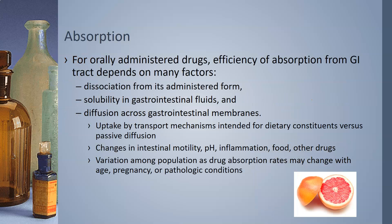For orally administered drugs, the efficiency of absorption from the GI tract depends on many factors. First is the dissociation from its administered form — whether it's a tablet or capsule, it must dissolve at the right time in the right area of the GI tract. Also important is how soluble the drug is in gastrointestinal fluids, since it needs to be soluble to be absorbed, and how well it diffuses across the GI membranes into the capillary circulation — either by transport mechanisms intended for dietary constituents or by passive diffusion.